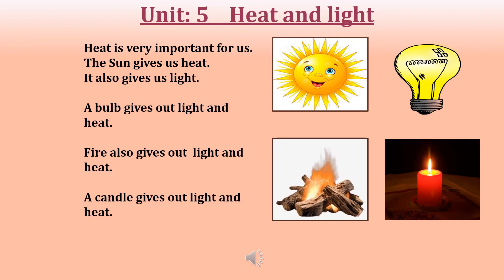The sun also gives us light. The main source of heat and light is the sun — it gives us heat and light in the daytime to see different things around us. Now the fourth sentence: 'A bulb gives out light and heat.' Another source of light and heat is the bulb.